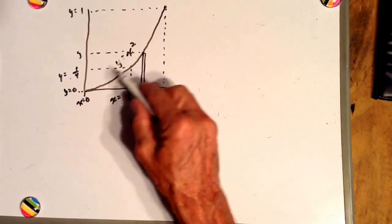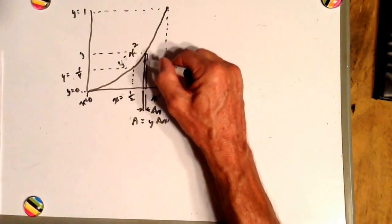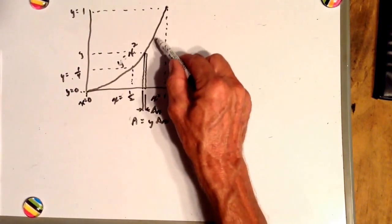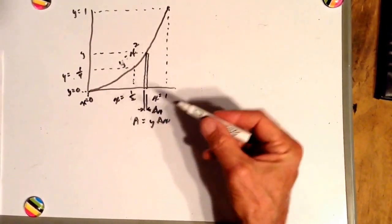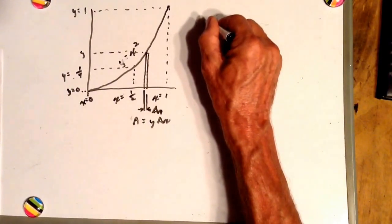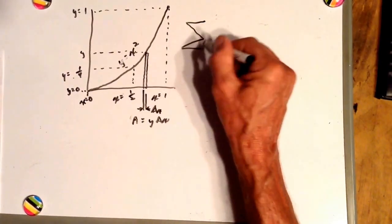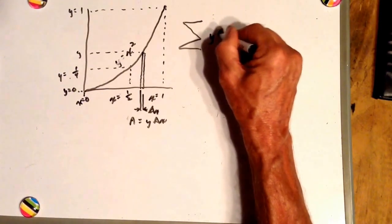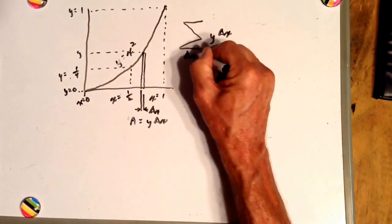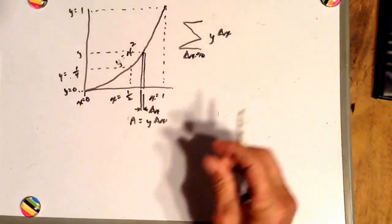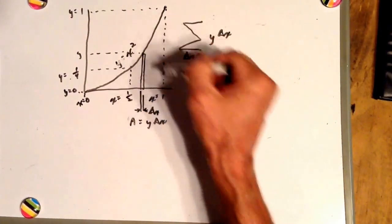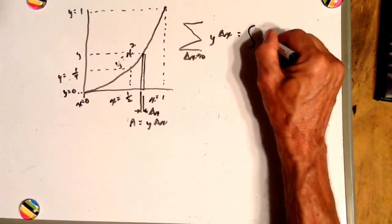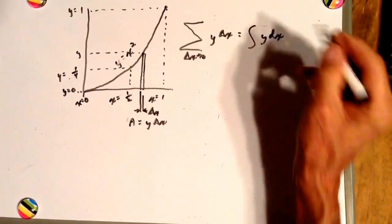If we want to find out the areas of all these little slivers underneath this line, when we have an infinite number of these slivers, then we say the summation of y delta x as delta x approaches zero, in other words an infinite number of these, equals the integral of y dx.